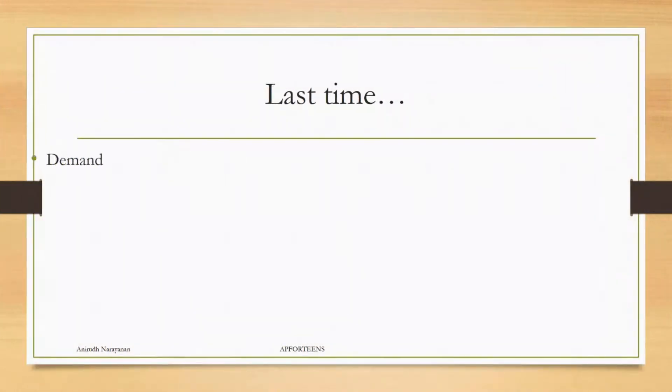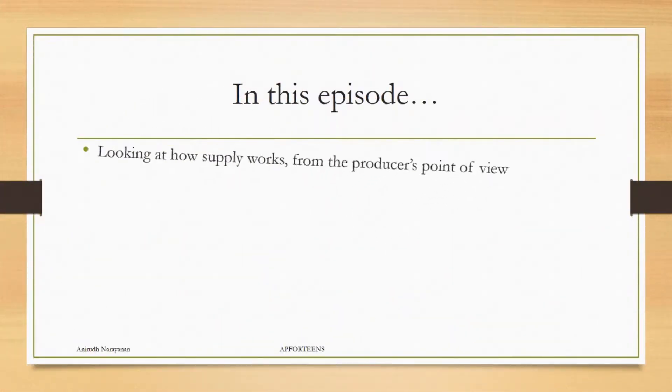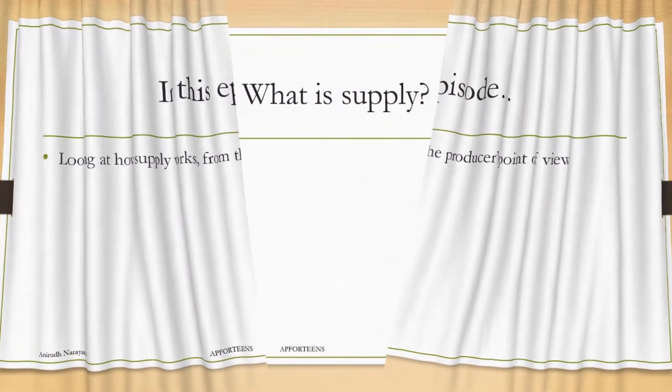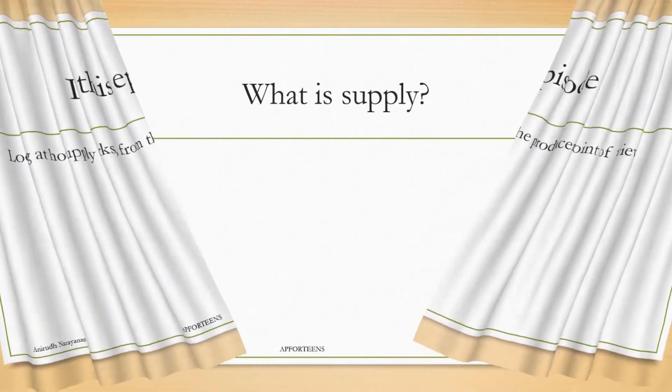Last time we were talking about demand, and we talked about the laws of demand and demand charts in general. We also talked about demand, demand, and more demand. This time, we're going to be talking about something a little bit different. In this episode, we're going to talk about how supply works from the producer's point of view. So, let's get started with the question that always starts a video.